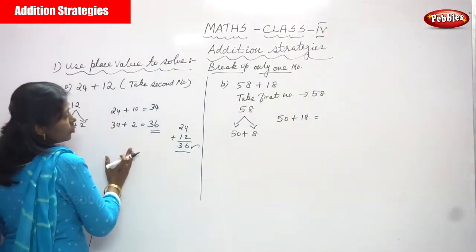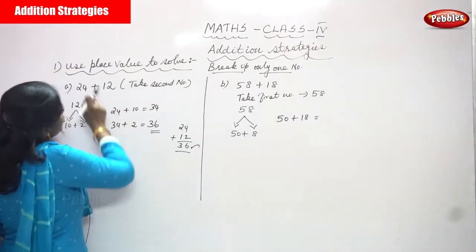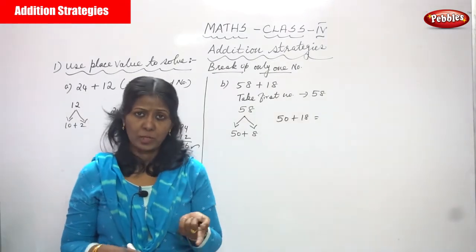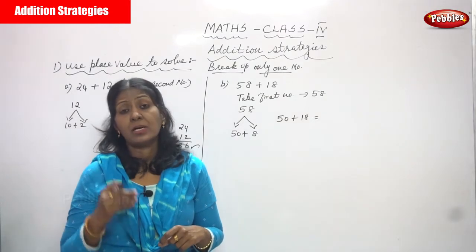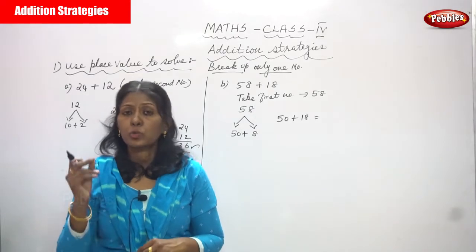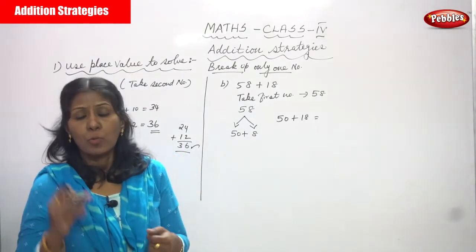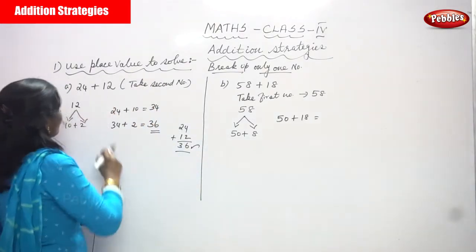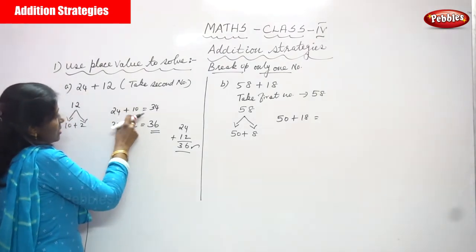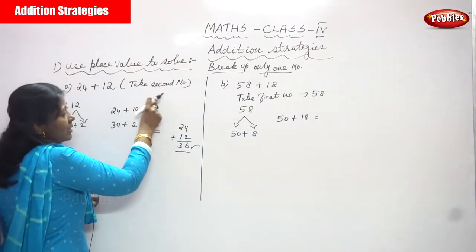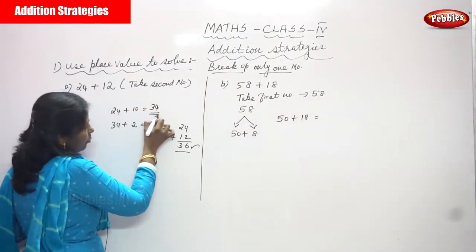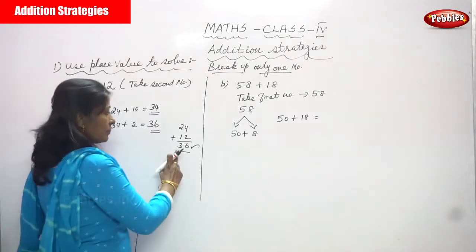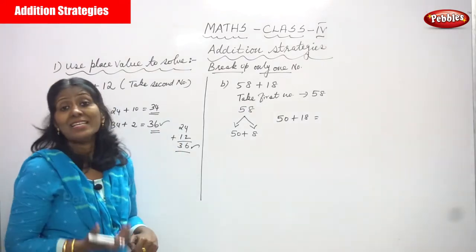This is the addition strategy using place value, breaking up only one number. We took the second number 12 and split it into 10 plus 2 — 2 in the ones place and 10 in the tens place. Then 24 plus 10 gives 34, and 34 plus 2 gives 36. Both the simple addition and the strategy method give the same answer.